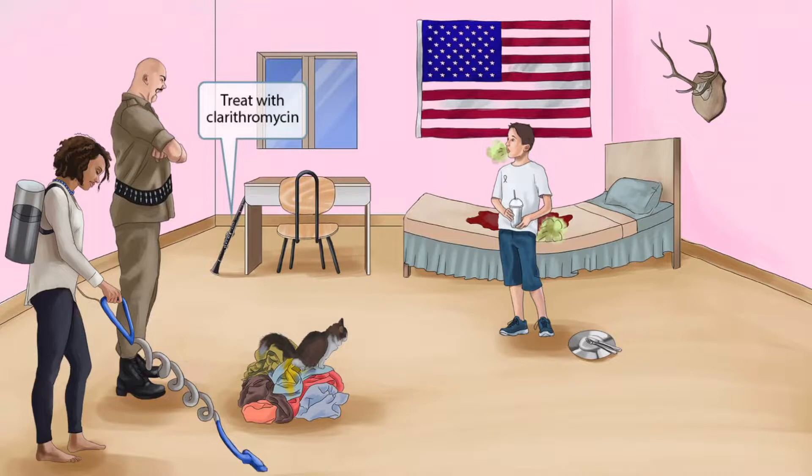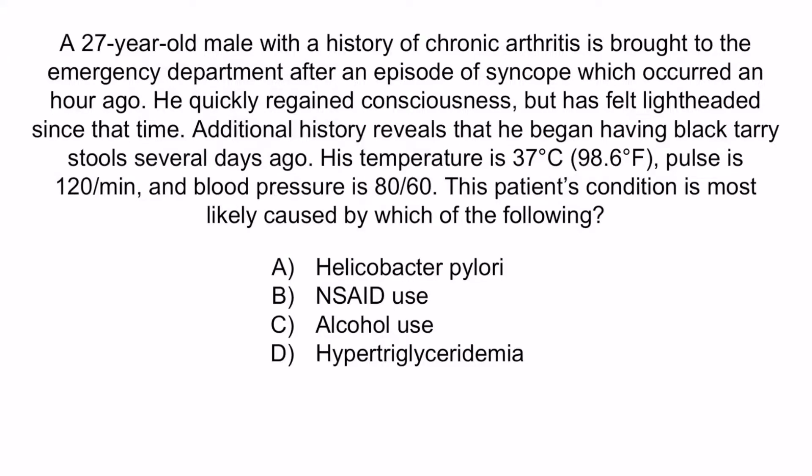Now let's review with a question. A 27-year-old male with a history of chronic arthritis is brought to the emergency department after an episode of syncope which occurred an hour ago. He quickly regained consciousness but has felt lightheaded since. Additional history reveals black tarry stools several days ago. His temperature is 37°C, pulse is 120 per minute, and blood pressure is 80 over 60. What is the most likely cause of this patient's condition? A. Helicobacter pylori, B. NSAID use, C. Alcohol use, or D. Hypertriglyceridemia.